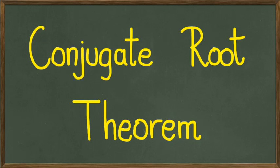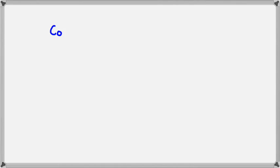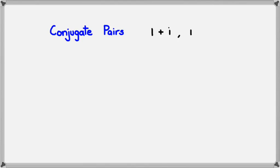In this session we're going to be talking about the conjugate root theorem. If you have forgotten what a conjugate is, here's a quick example. This is what we call a conjugate pair: if you have 1 plus i, then the conjugate would be 1 minus i. Another example: if you have 2 plus 3i, then the conjugate of this would be 2 minus 3i.